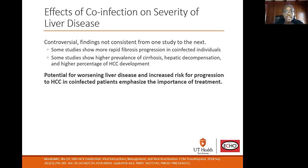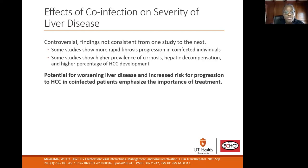The effect of co-infection on severity of liver disease is controversial, and findings are not consistent from one study to the next. Some studies show more rapid fibrosis progression in co-infected individuals, higher prevalence of cirrhosis, hepatic decompensation, and a higher percentage of HCC development. There is potential for worsening liver disease and increased risk of progression to HCC in co-infected patients, and this emphasizes the importance of treatment.